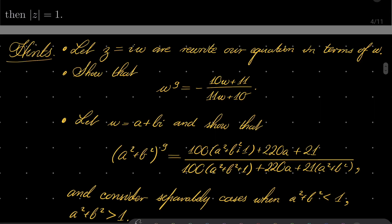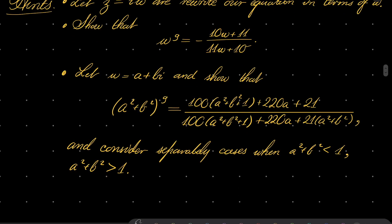Here are my hints for this problem. The first step is not strictly necessary but I will do it. Let z equal i times w and rewrite our equation in terms of this new variable w. You should be able to show that w to the power of 9 equals minus 10w plus 11 over 11w plus 10. Then write w in standard form a plus bi and show that after taking the modulus on both sides, a squared plus b squared to the power of 9 equals a certain expression. Consider separately two cases: if a squared plus b squared is less than 1, and if a squared plus b squared is greater than 1. In both cases you should get a contradiction. Give this problem a try and I will see you in just a minute.